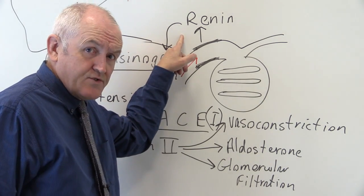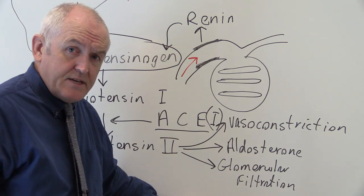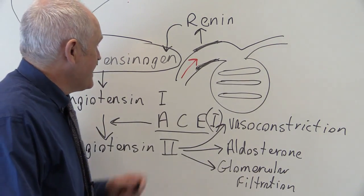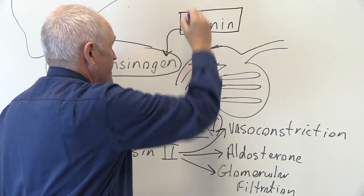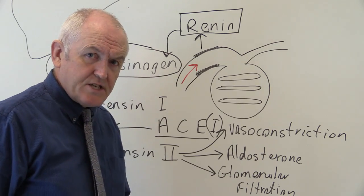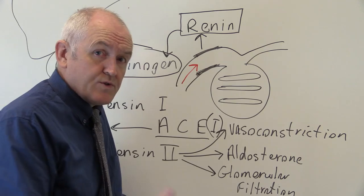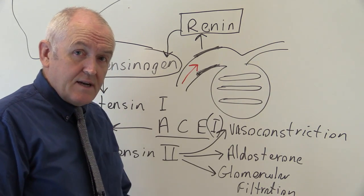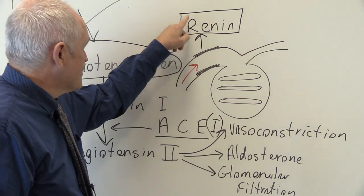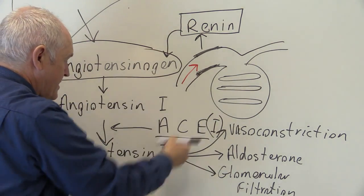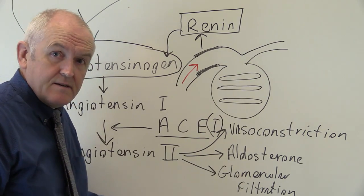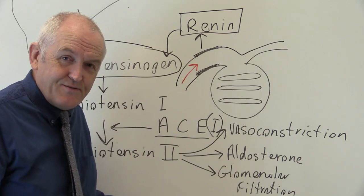In most western countries the prime cause of hypertension is that the kidney is secreting too much renin — that is the prime cause of most essential hypertension. For African populations it is slightly different, because African populations are often salt-retaining people and their hypertension can be caused primarily by increased sodium in the blood. But for western populations it is too much renin, and we can interfere with this pathway by giving ACE inhibitors. The kidney is therefore one of the prime organs in the regulation of systemic blood pressure.